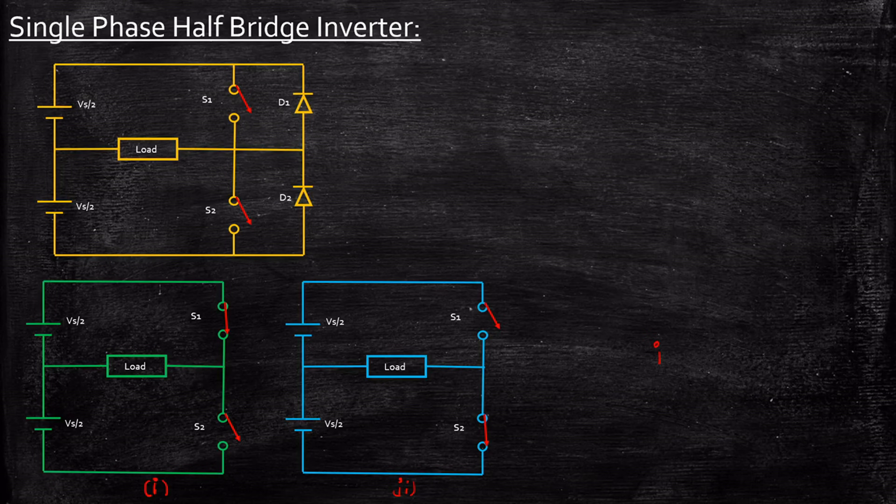During the operation of circuit number one, I'll be calling this 0 < t < T/2. And circuit number two operation, I'll call T/2 < t < T.